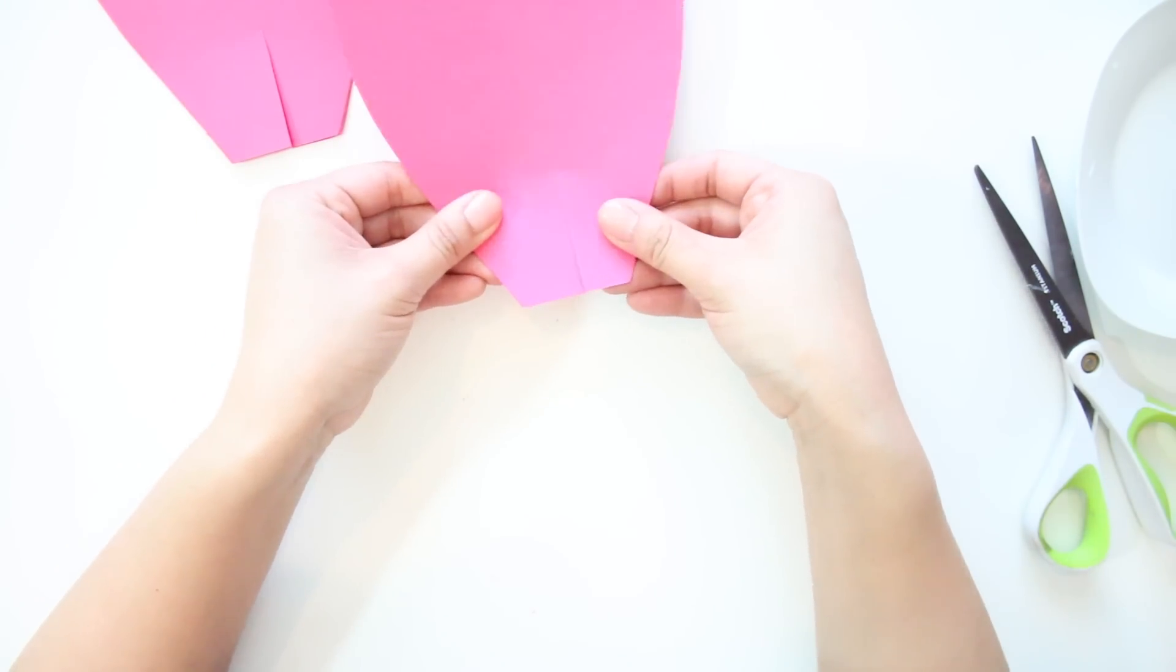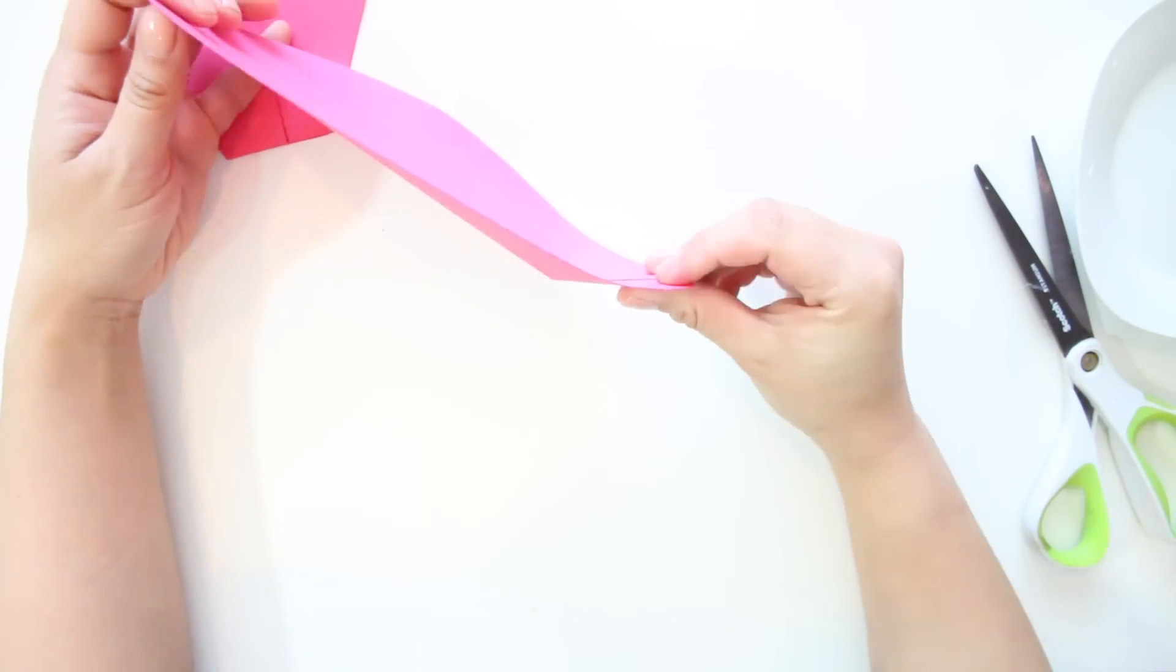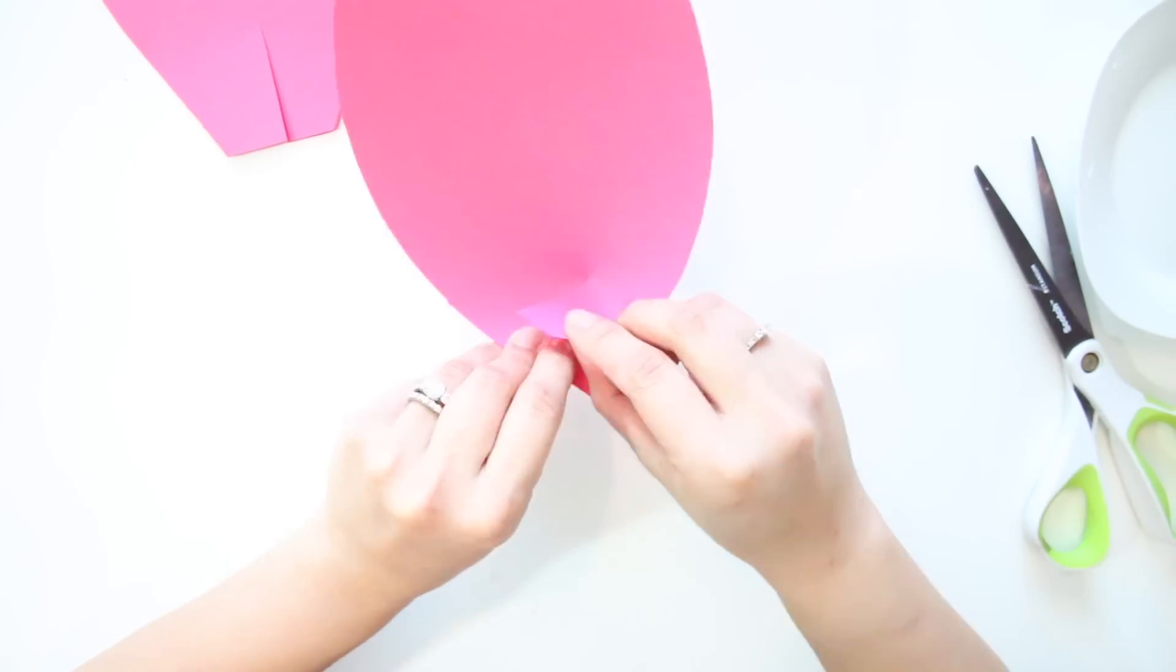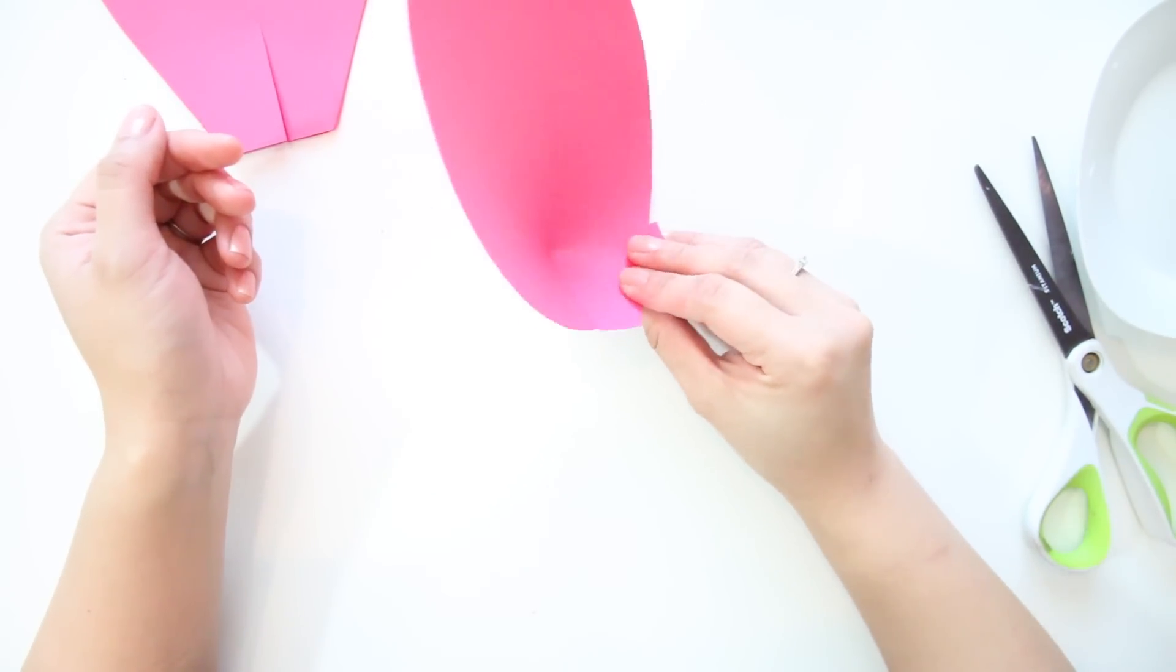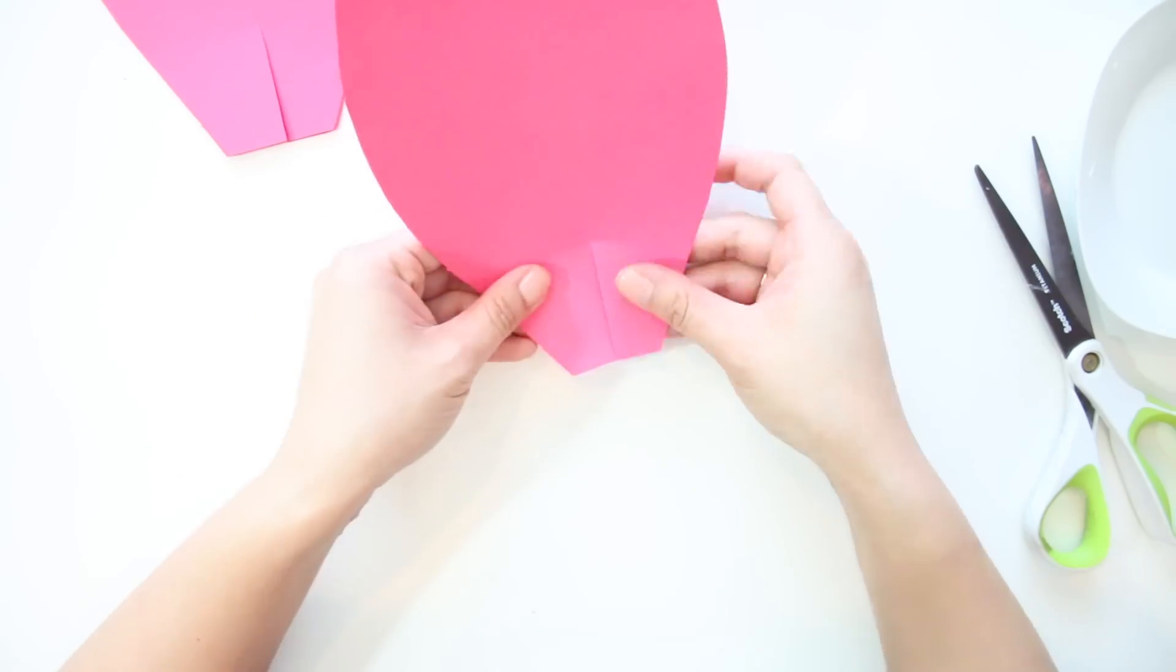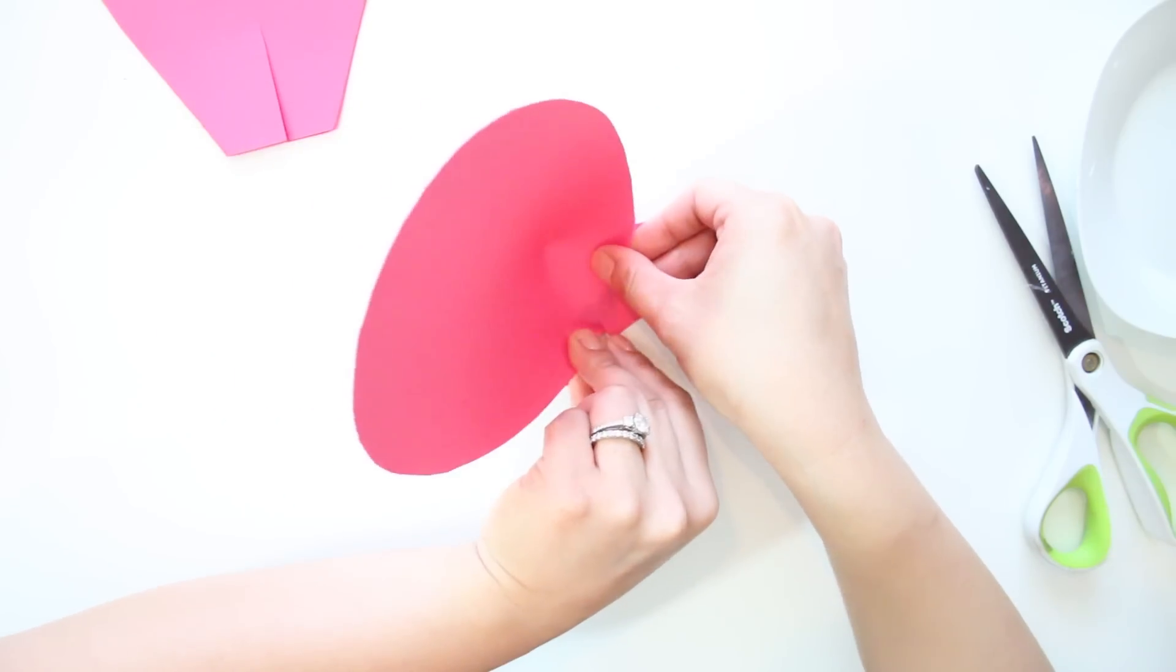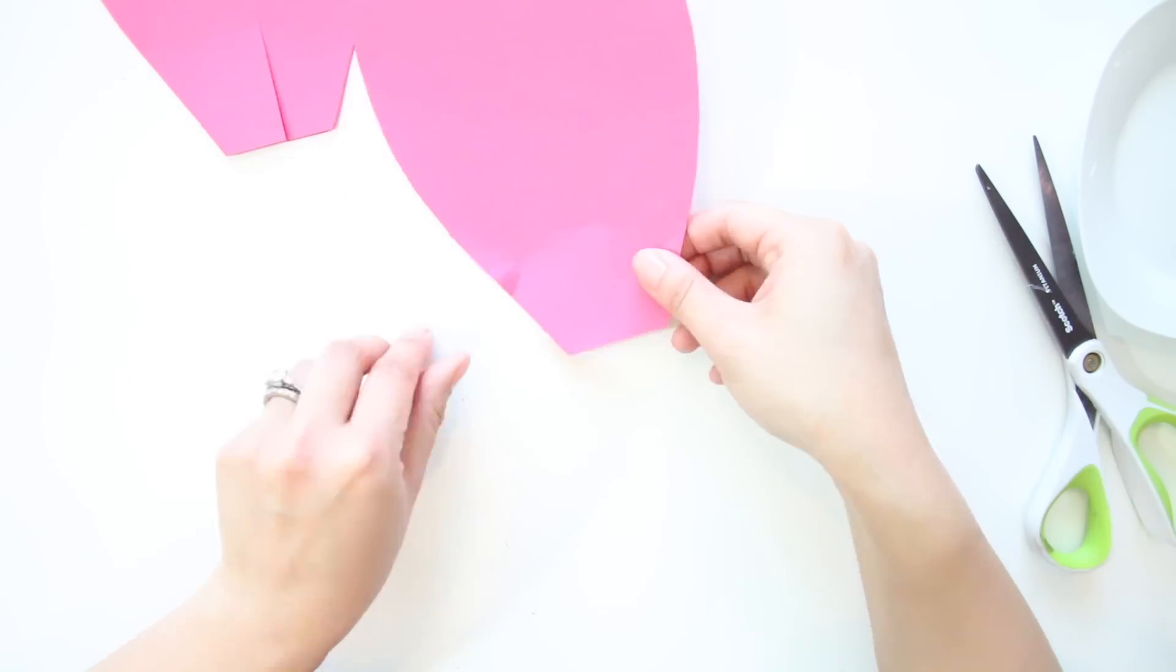You're going to glue one flap on top of the other so that they overlap. The reason you are going to do this is so that the petal sits at an angle. For the outer petals, you don't want it to angle as much so you don't overlap the flaps too much. But as you move towards the center, the petals should stand up straighter so you'll want to overlap the flaps more so the petals stand up.